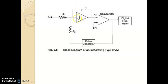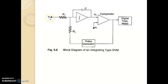In this diagram, on the input side, there is an integrator. In the integrator, the capacitor C is always connected between the output and input. You can say capacitor C is used as a filter. Here, ER is the input voltage — it is an unknown input voltage.